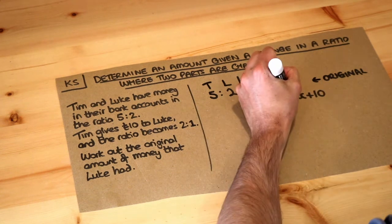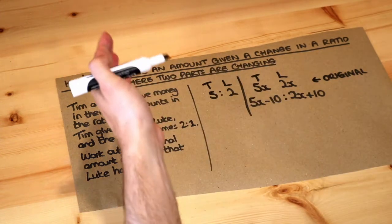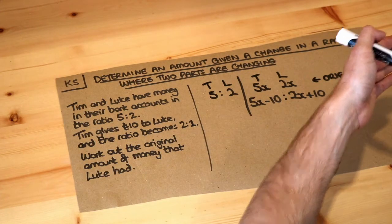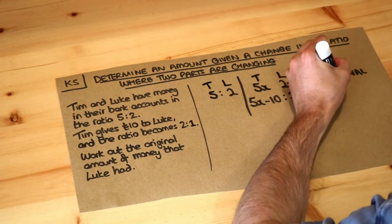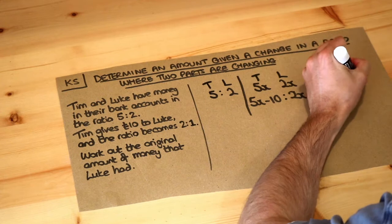Now if we turn these amounts into a ratio by just putting a colon there. If say someone had 3 pounds and the other person had 5 pounds then the ratio could be written as 3 to 5. We can just turn those amounts into a ratio. And we're told this is in the ratio 2 to 1.